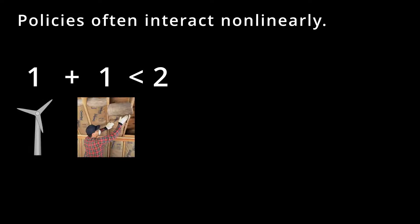This task is made more challenging by the fact that policies interact with one another. In other words, the results of one policy depend on which other policies are in effect at the same time. For example, suppose you study a policy that would promote wind power and find that it would reduce emissions by one unit. Then you study a policy that would promote energy efficiency in buildings, and find that it would also reduce emissions by one unit. Then you enact them both. The emissions reduction you will achieve is likely to be less than two units, because some of the energy savings from the efficiency policy will come out of power generated by wind due to the wind policy.